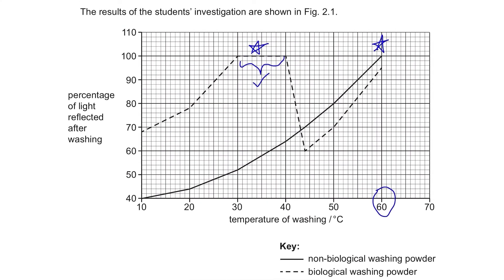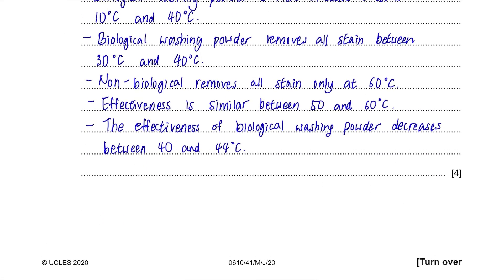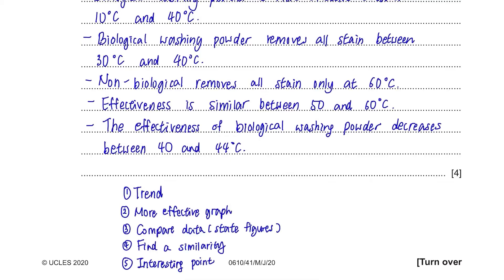The effectiveness is similar at high temperatures from 50°C. You can also note that the effectiveness of biological washing powder decreases between 40°C and 44°C, since there is a significant drop in the graph. State the trend, identify the more effective graph, compare some data, find a similarity and an interesting point, and you'll be able to score full marks for questions like this.